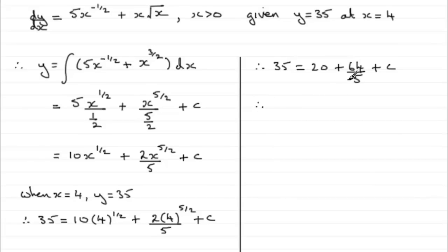So to get that c now, all I need to do is take 20 and take 64 fifths from the 35. And if you do that, what you end up with is c equals 11 fifths.